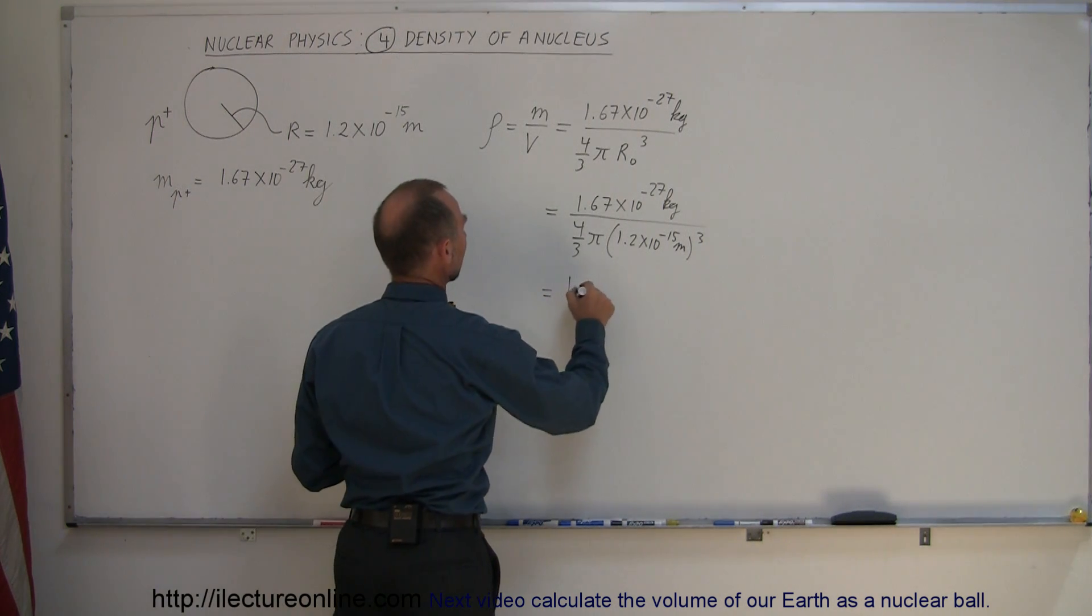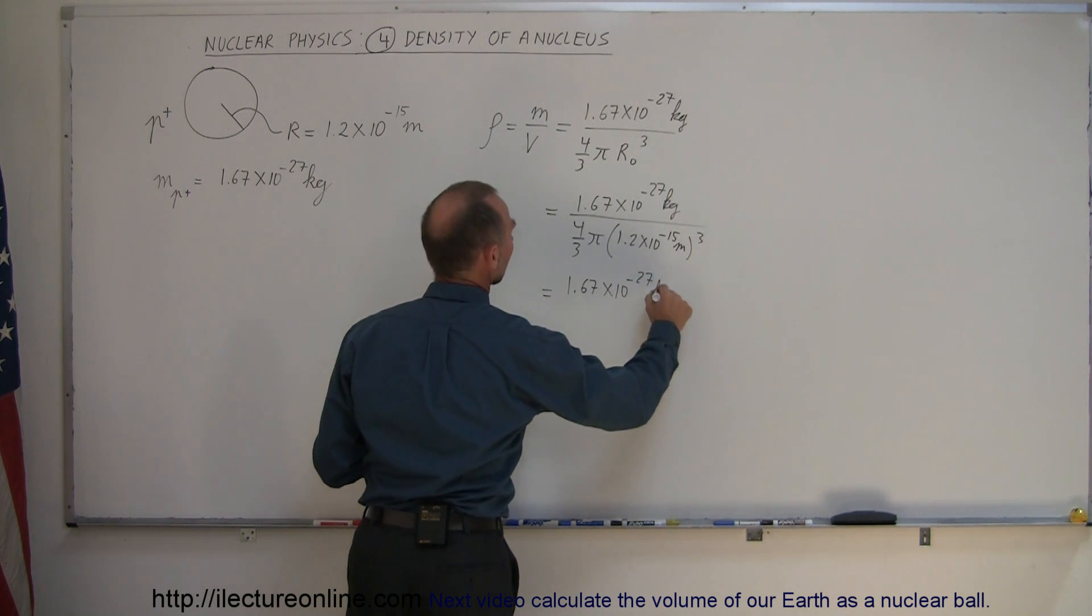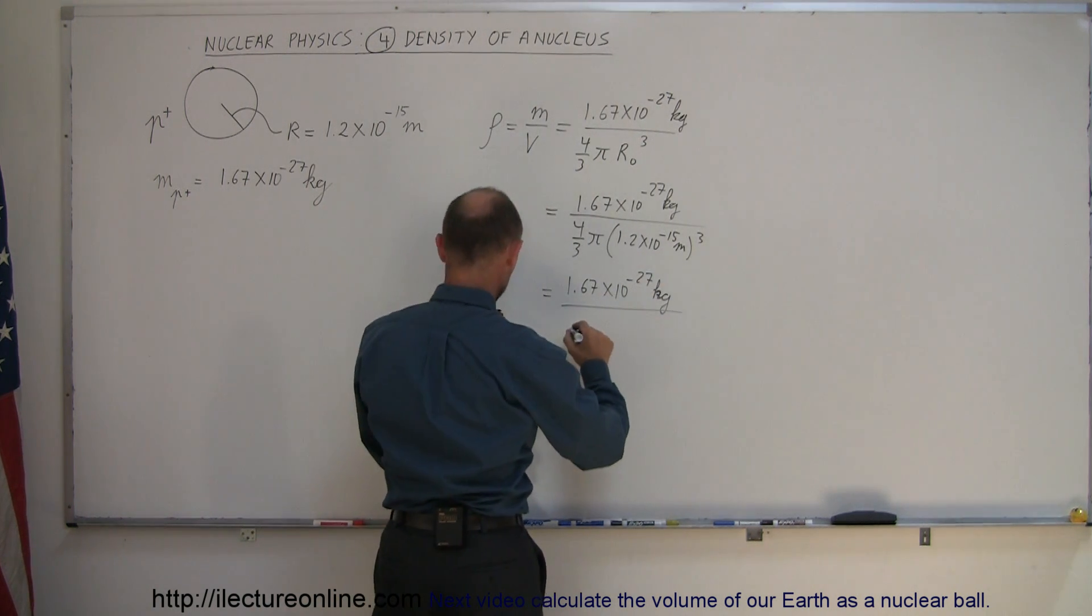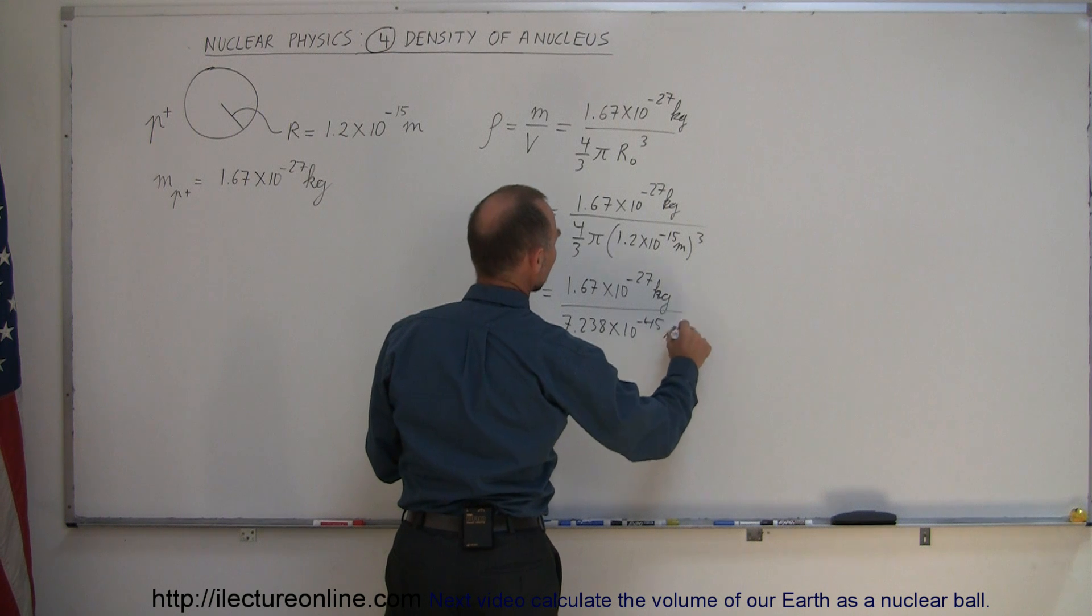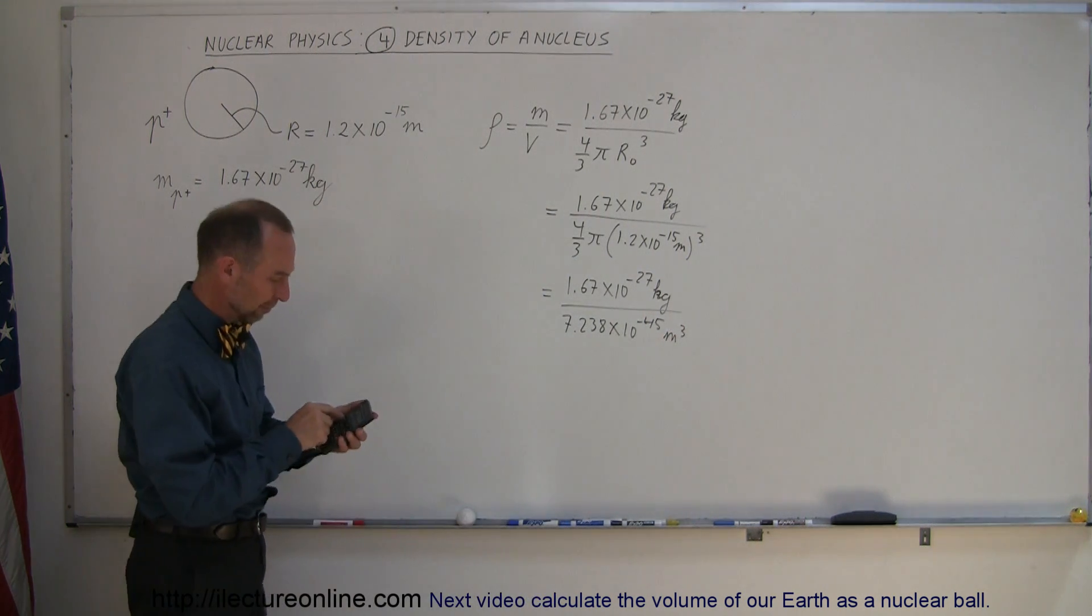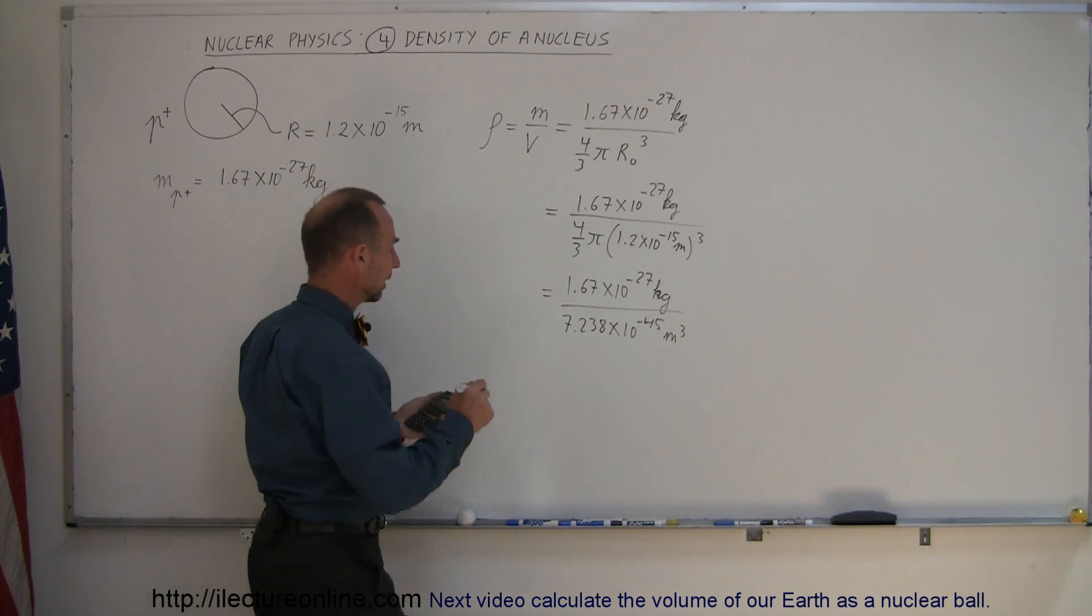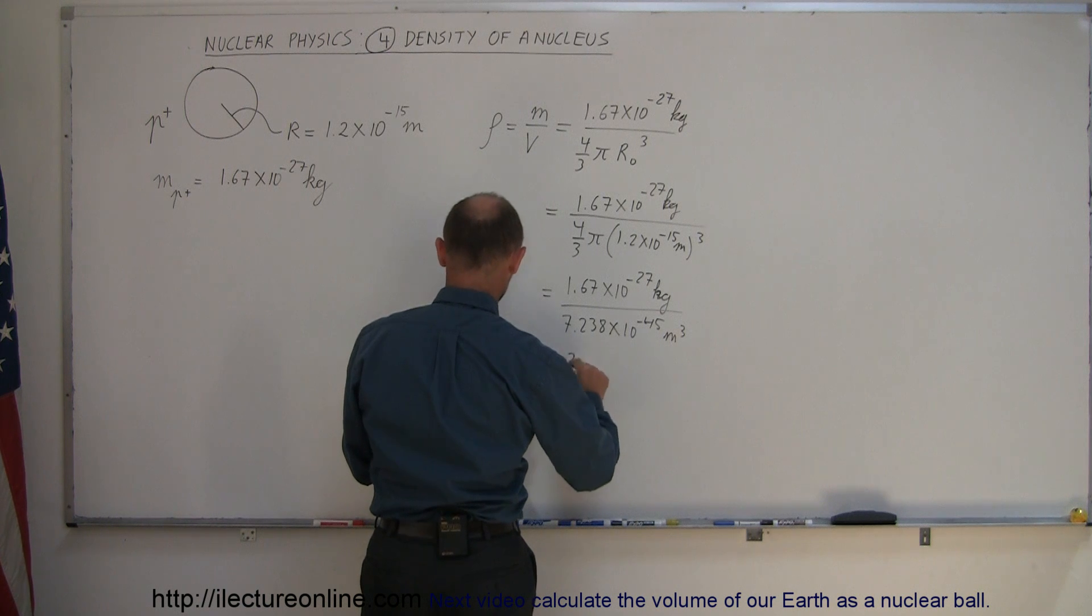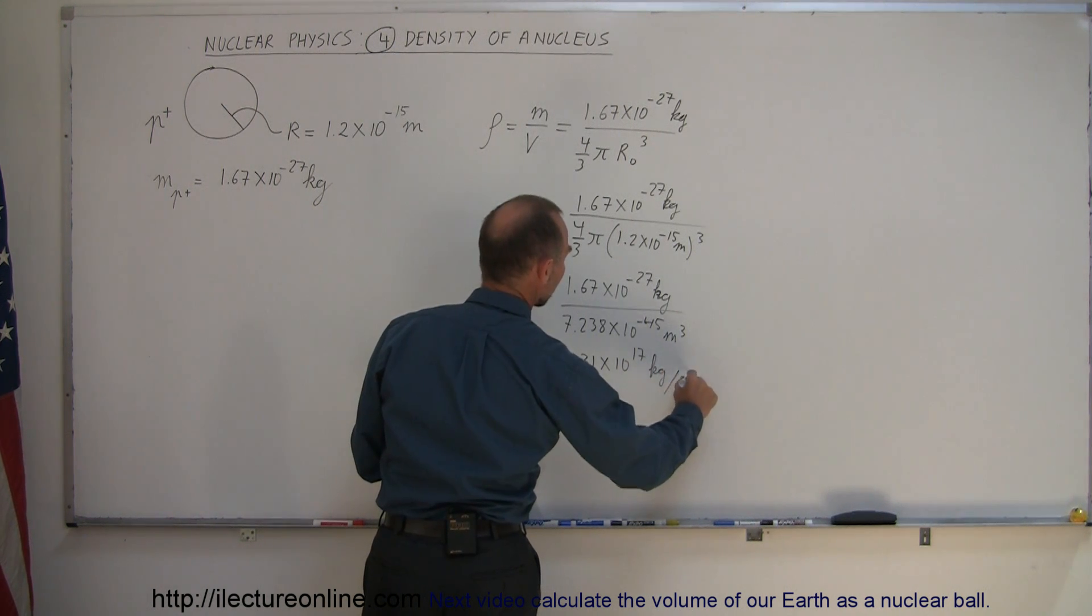So this equals 1.67 times 10 to the minus 27 kilograms divided by the volume of 7.238 times 10 to the minus 45 cubic meters. Take the inverse of that, multiply it times 1.67 e to the 27 minus,